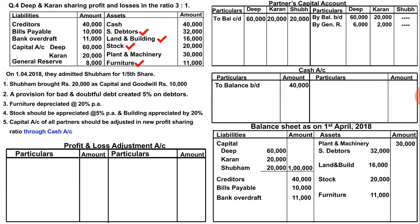Now I will start with the second adjustment related to assets. RDD is 5% given. Calculating on debtors of 32,000 at 5% gives RDD of 1,600. So debtors in the outer column become 30,400 with 1,600 deducted. The second entry posts to the debit side of the profit and loss adjustment account.